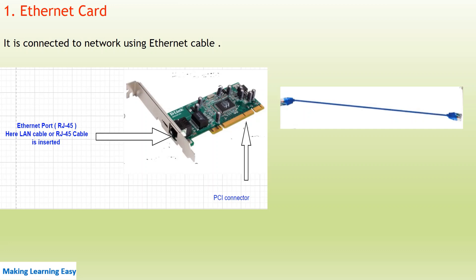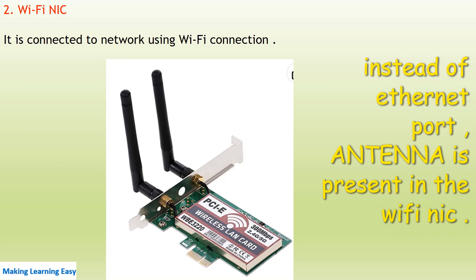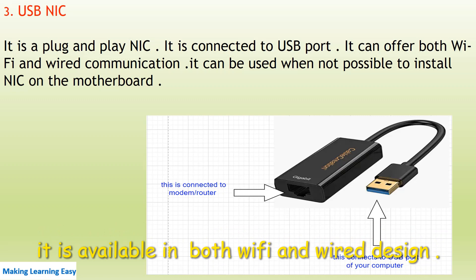The other end connects to the ethernet port of another computer or device such as a router or modem. For a Wi-Fi NIC, you don't have to use a cable — it uses the radio waves to connect one computer to another or to a network. For a USB NIC, as already explained, it is a plug-and-play NIC — you just connect it to the USB port and it will work as a NIC.